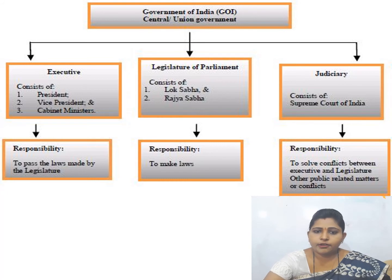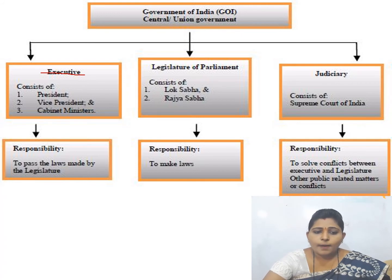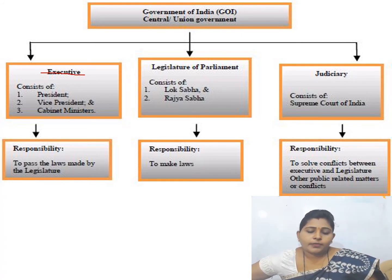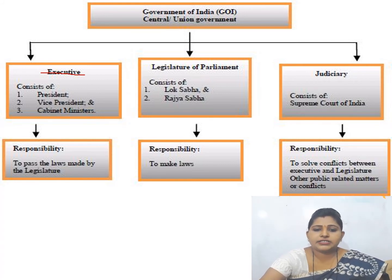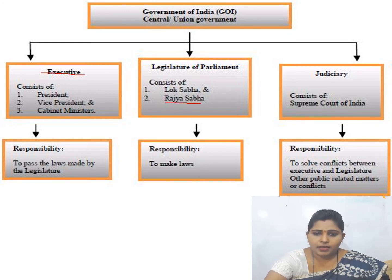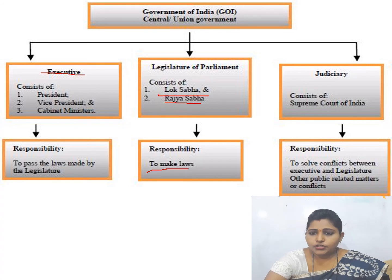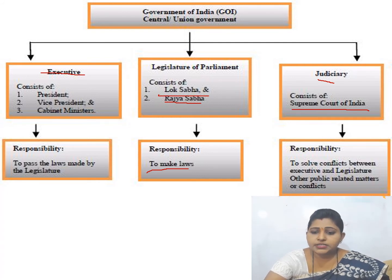Here are the forms of government of India. The Executive consists of the President, Vice President, and Cabinet Ministers. Their responsibility is to pass the laws made by the legislature. The Legislature, or Parliament, consists of the Lok Sabha and Rajya Sabha, and their responsibility is to make laws. The Judiciary consists of the Supreme Court of India, whose responsibility is to solve conflicts between the executive and legislature and handle other public-related matters.